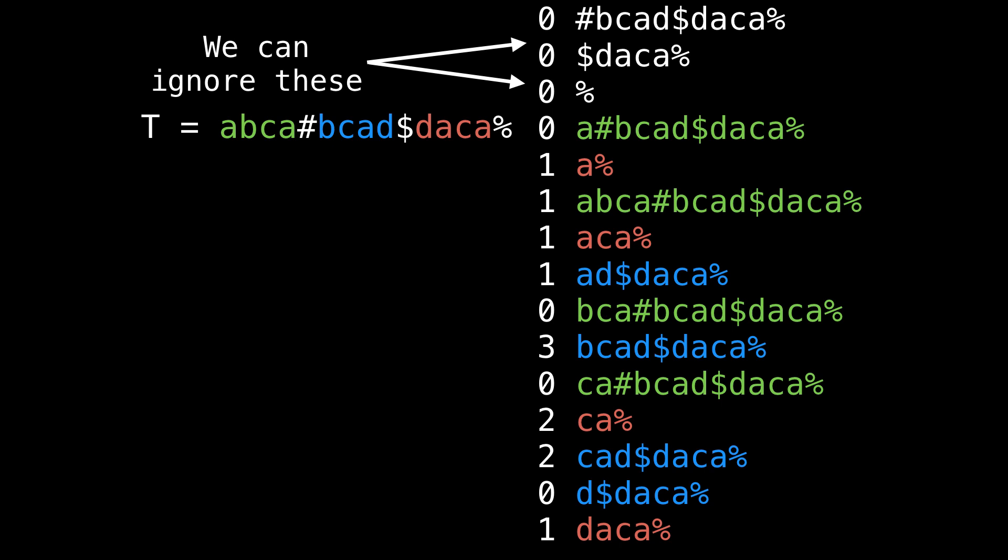In the slide, you can see that the suffixes starting with sentinel values got sorted to the top because they were lexicographically less than all the characters in the string, and this is to be expected. For our purposes, we want to ignore them because we injected them into the string T ourselves.